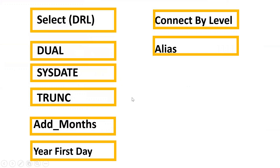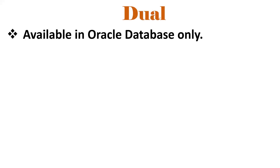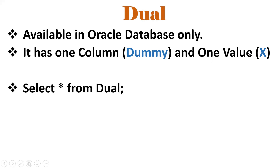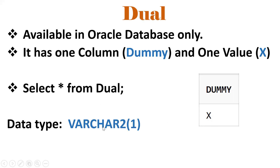Let us discuss one by one. So what is DUAL? It is available in Oracle database only. It has only one column and one value. The name of the column is DUMMY and its value is X. So if I query SELECT * FROM DUAL, it will display DUMMY and X.